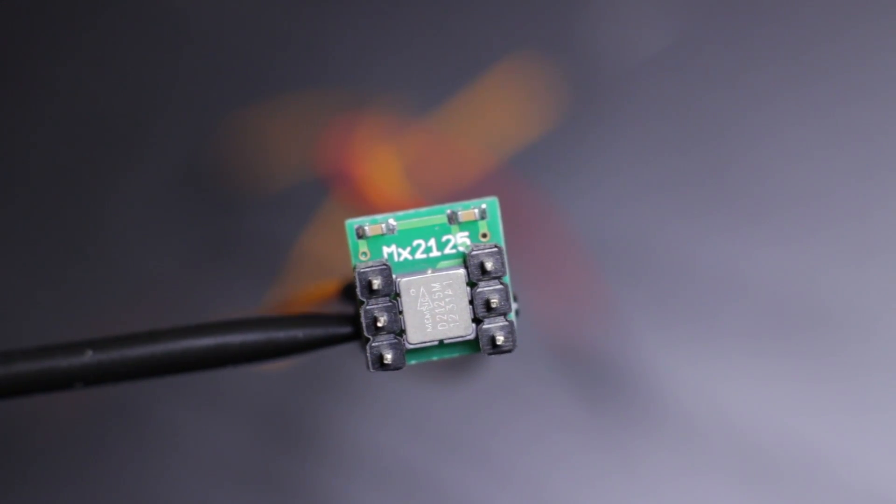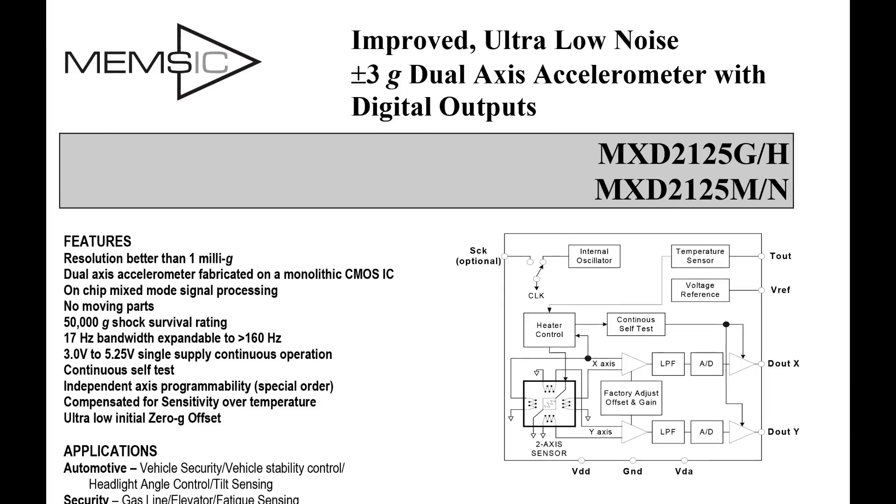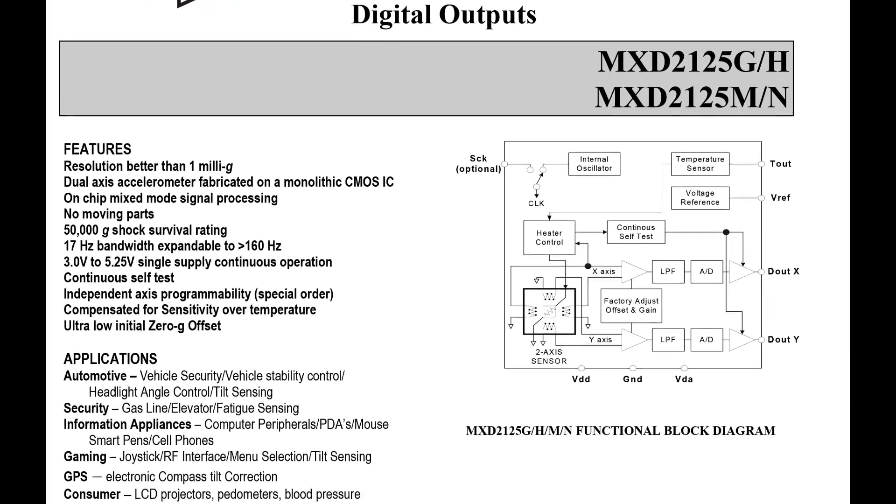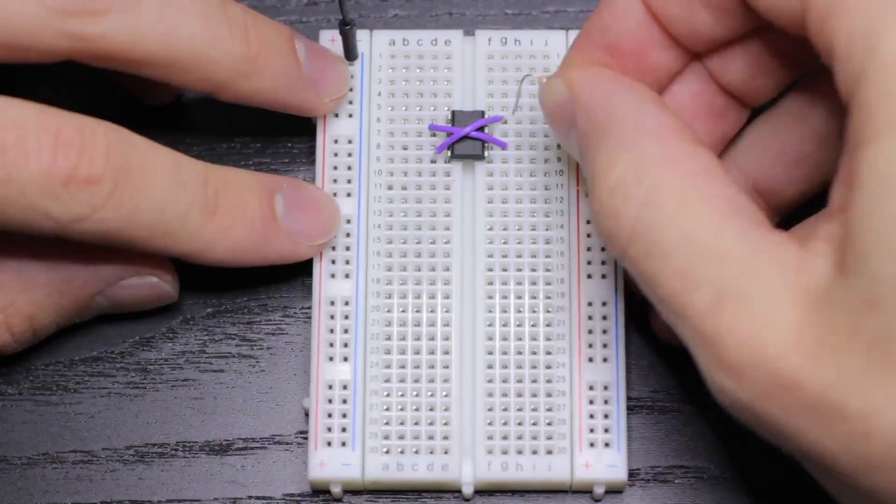This MX2125 is a MEMSIC dual axis accelerometer available from Parallax. I recommend reviewing the data sheet.